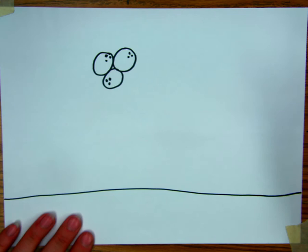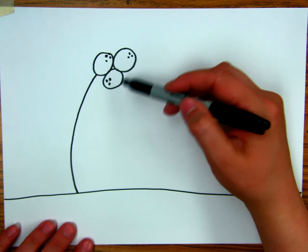Next, draw a curved line down. Make another curved line down for a trunk.